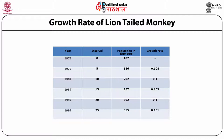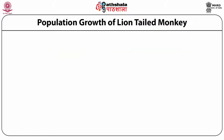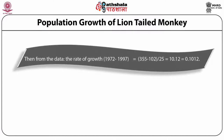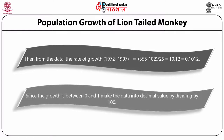The growth of the lion-tailed macaque from 1972 to 1997 (0 to 25 years) shows an increase in numbers from 102 to 355. The growth rate, if calculated, ranges between 0.108 to 0.1. The growth rate from 1972 to 1975 for the entire population is 10.2, which, converted to a decimal value by dividing by 100, gives approximately 0.1012.